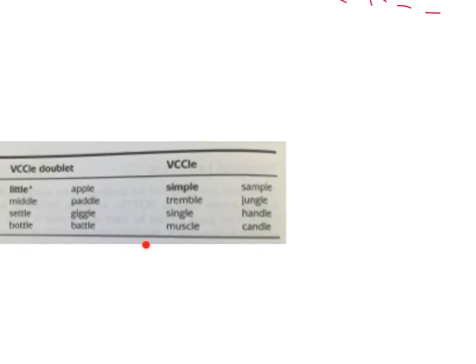And your V-C-C-L-E words that aren't doublets: simple, tremble, single, muscle, candle, handle, jungle, sample.